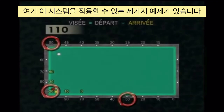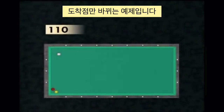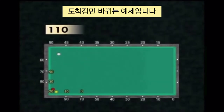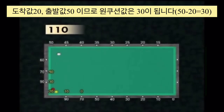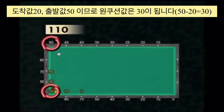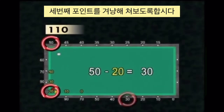Here you will see three examples illustrating such systems, the arrival value being the only variable. With an arrival at 20 and a departure at 50, the player needs to aim for the 30 in the direction of the third diamond.